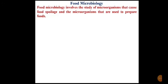Good morning everyone. We'll be talking on food microbiology under the title of scope and applications of microbiology. Food microbiology involves the study of microorganisms that cause spoilage of food and the microorganisms that are used to prepare foods. That means food microbiology involves both aspects: the beneficial aspect as well as the harmful aspect.